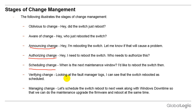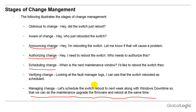Verifying change: you can look into the fault manager logs and see that the switch got rebooted. Overall, managing change is better when scheduled with proper timing and proper intimation, with proper communication to all affected areas. For example, schedule the switch reboot to next week along with the Windows downtime. Every month we have downtime for Windows fixes and patch management, so it is better to align with the existing downtime and perform the maintenance so users are not affected.